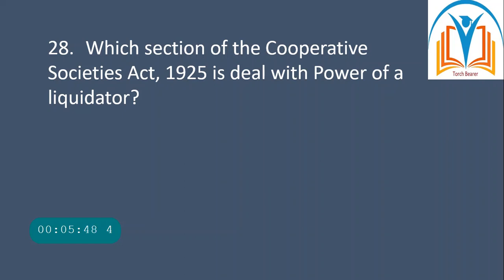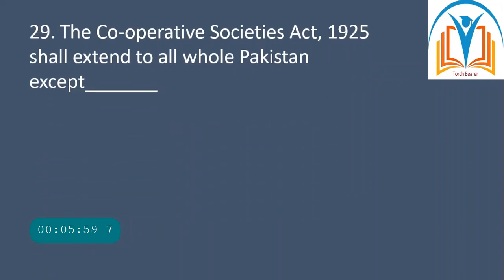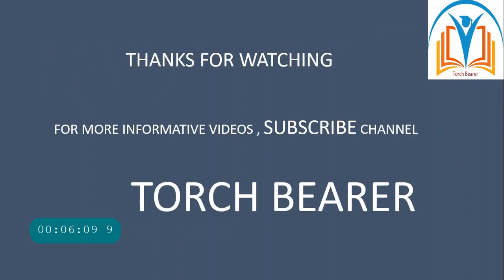Next question: which section of the Cooperative Societies Act 1925 deals with powers of a liquidator? It is section 50-A. Next question: the Cooperative Societies Act 1925 shall extend to all of Pakistan except FATA. That was all for this video. Thanks for watching. For more informative videos, subscribe to this channel — The Torch Bearer.